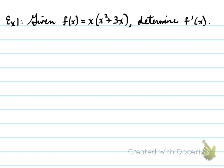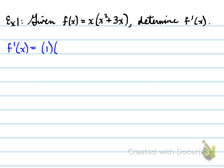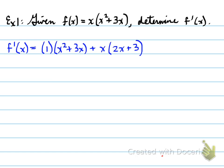We need to look at which one is f and which one is g. The first function is the first part of the product — x — and the second function is x squared plus 3x. To find the derivative, you take the derivative of the first, which is 1, multiplied by the second function, and add the first function times the derivative of the second part, which is 2x plus 3. That's one way to approach this question.